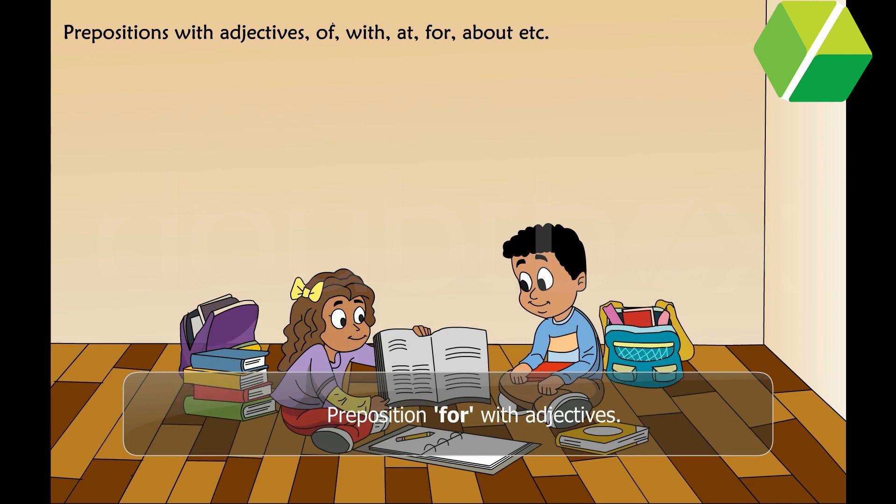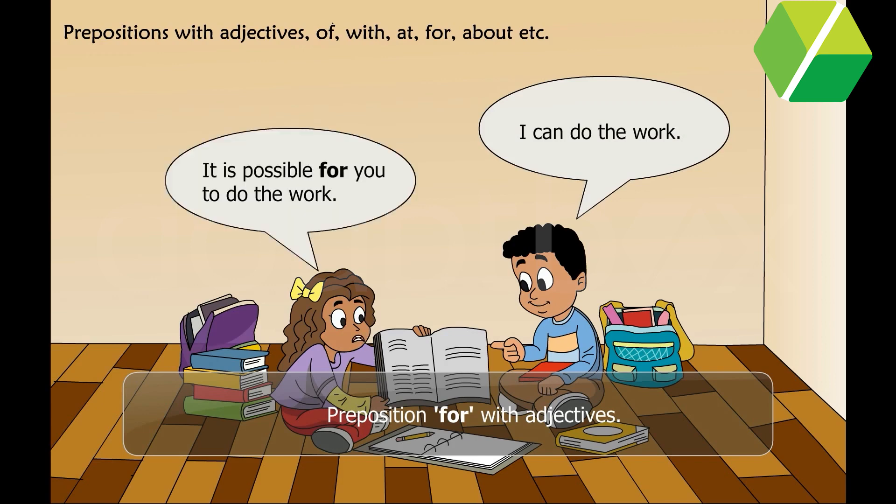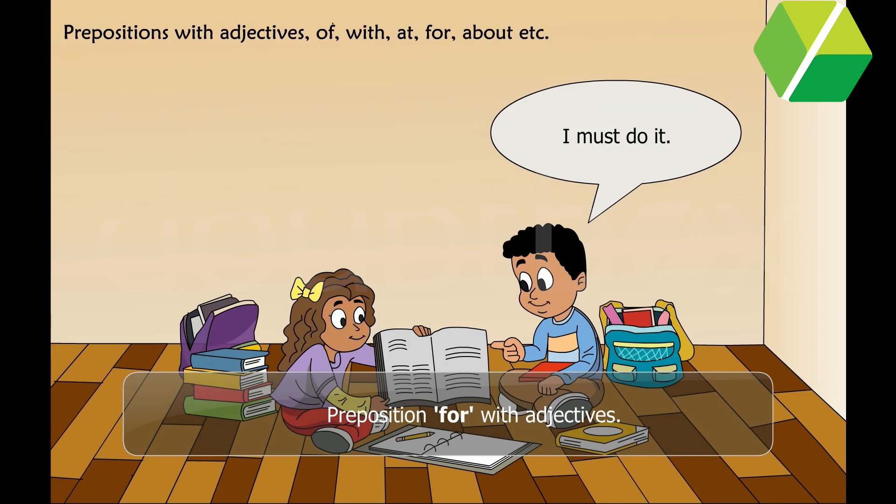Preposition for, with adjectives. I can do the work. It is possible for you to do the work. I must do it. It is important for you to do it.